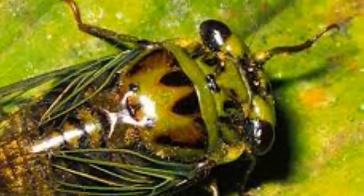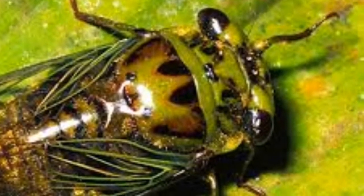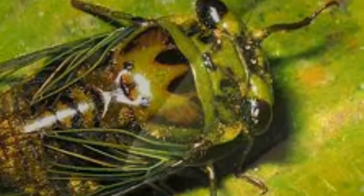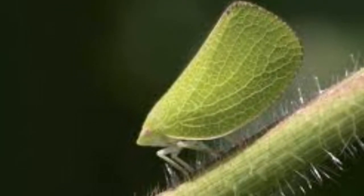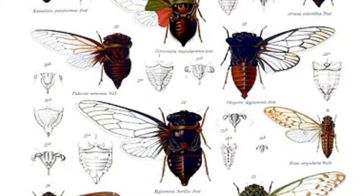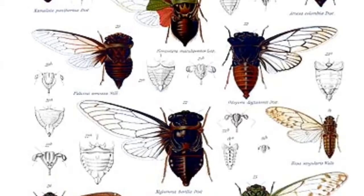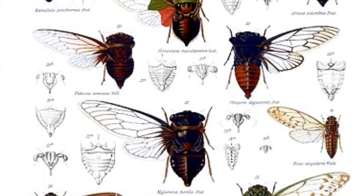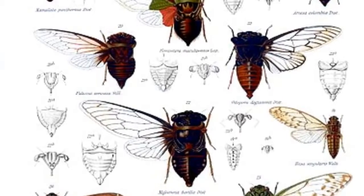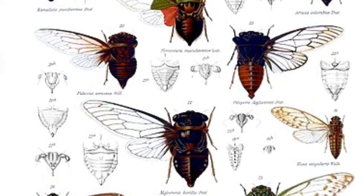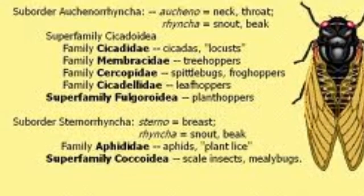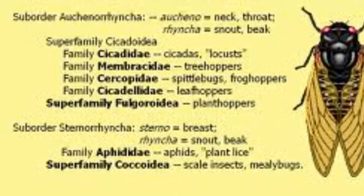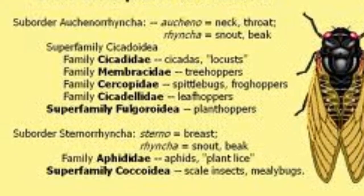The order name means 'same wings,' and it has aphids, leafhoppers, cicadas, and treehoppers in it. They're in there because scientists classify that that would be the best place for them. It's supposed to describe how special body features of this thing and stuff, and its wings are all the same on every one of them, for the most part.